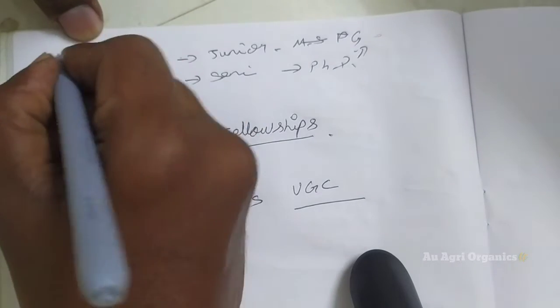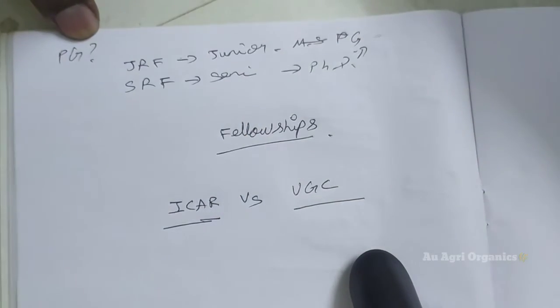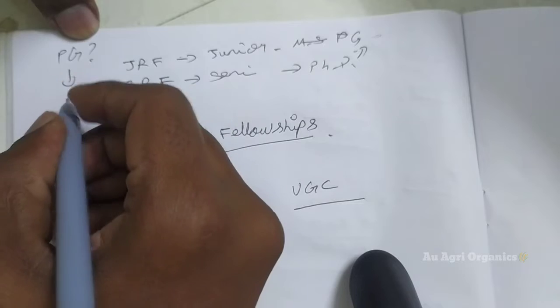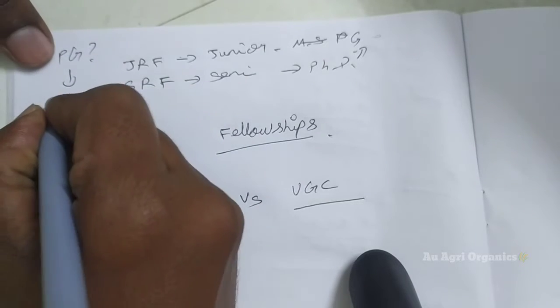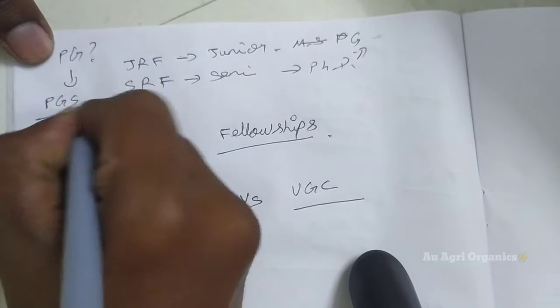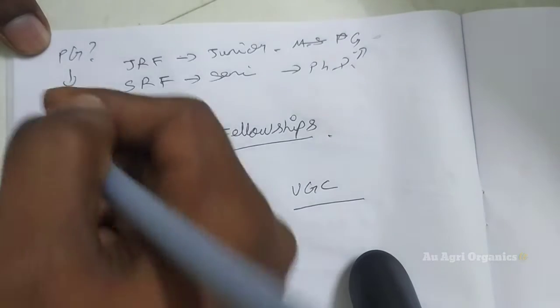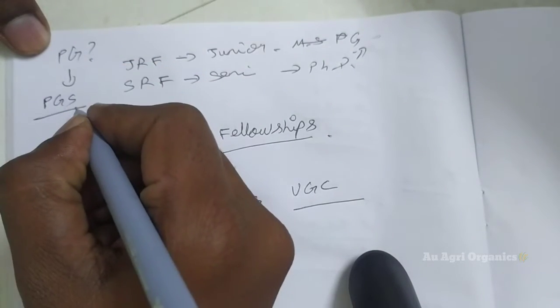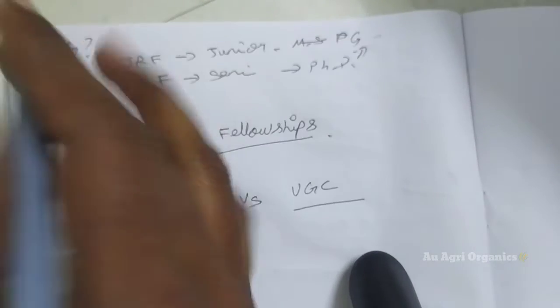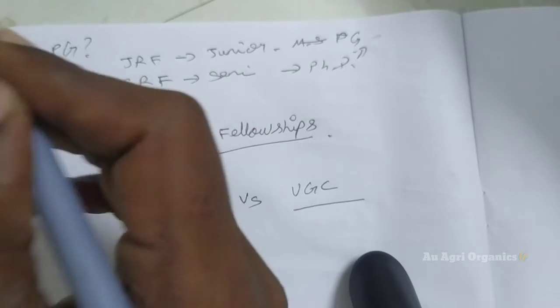Then for MSc student, that is for PG student, what is the fellowship? In ICAR, for PG student, there is one fellowship. It is called by the name PGS. Yes, this is not Postgraduate Studies. It is Postgraduate Scholarship. So for PG, you are getting scholarship, not fellowship. That one you have to understand.